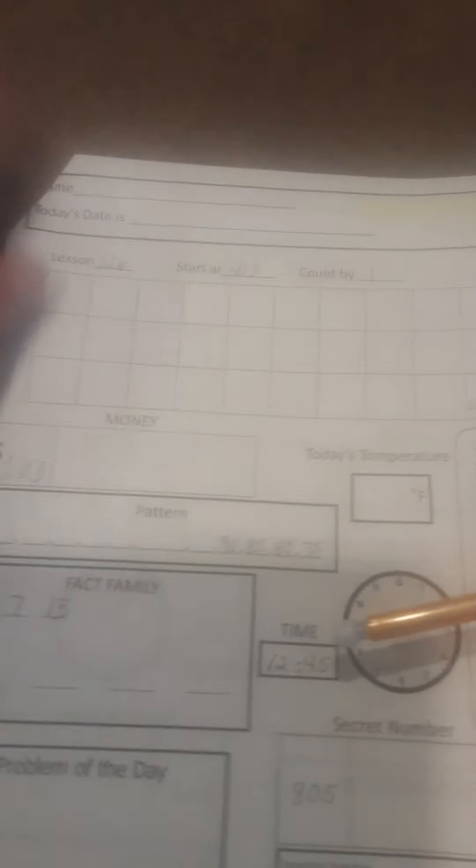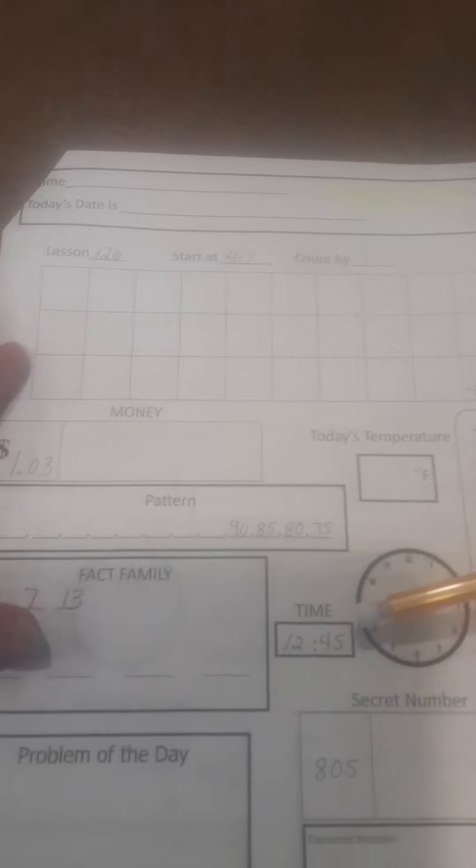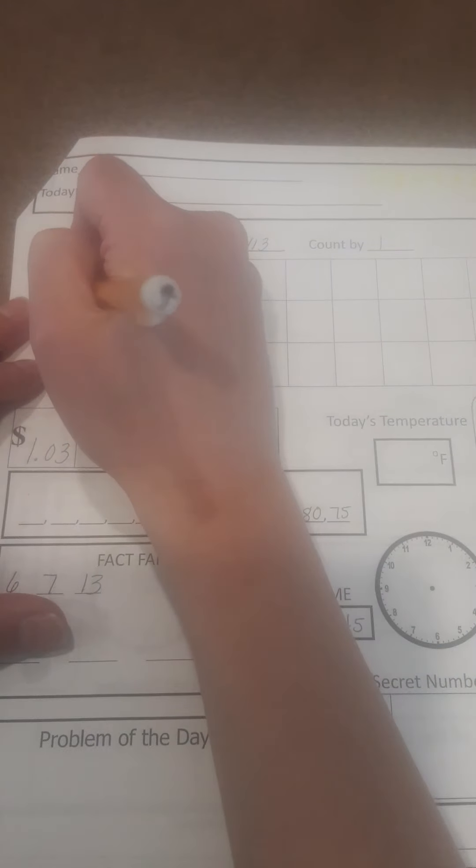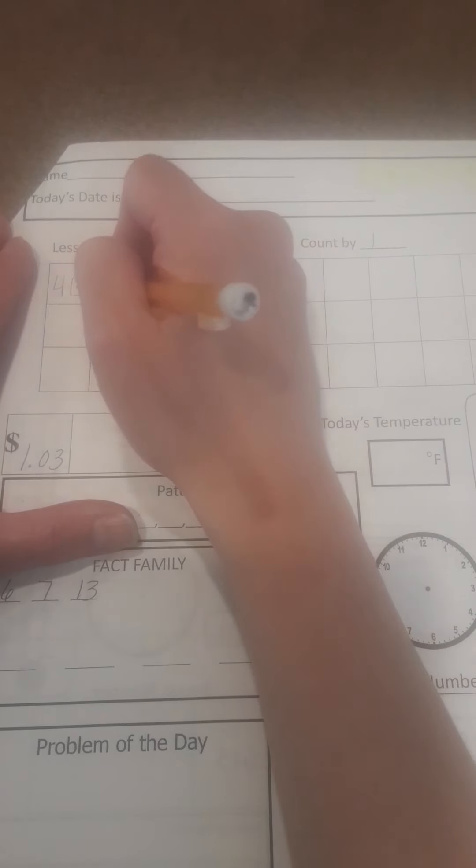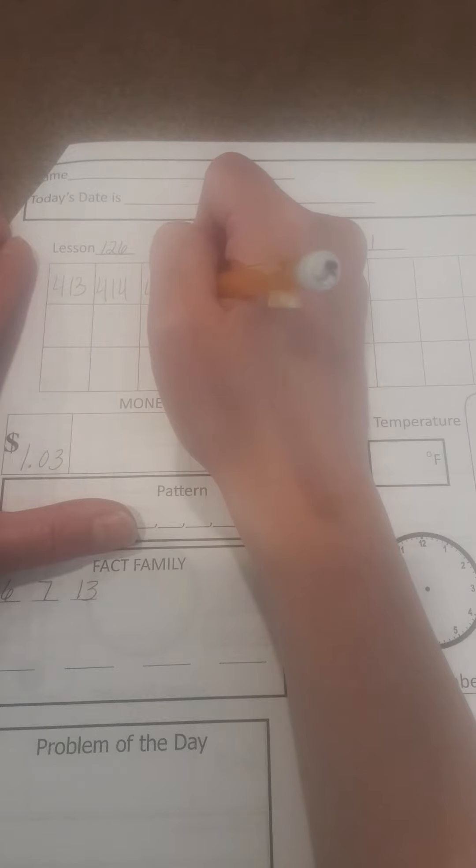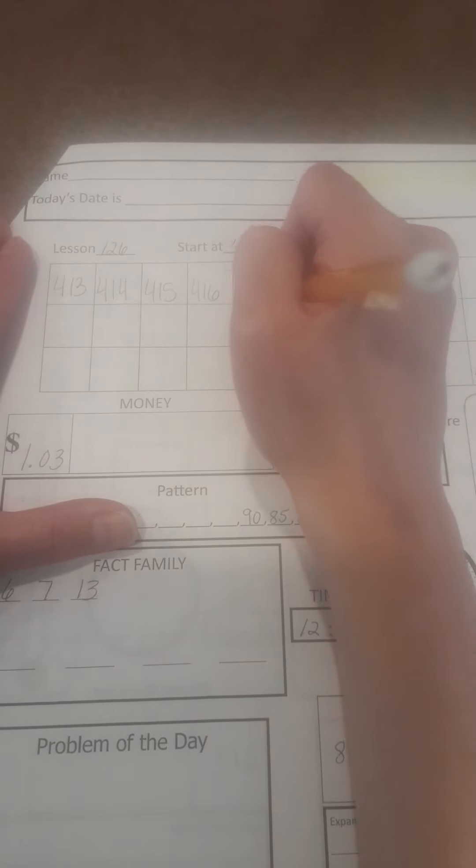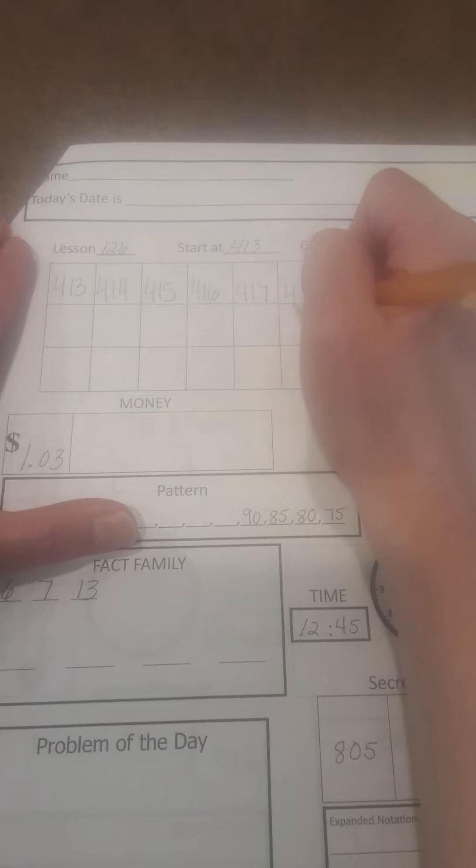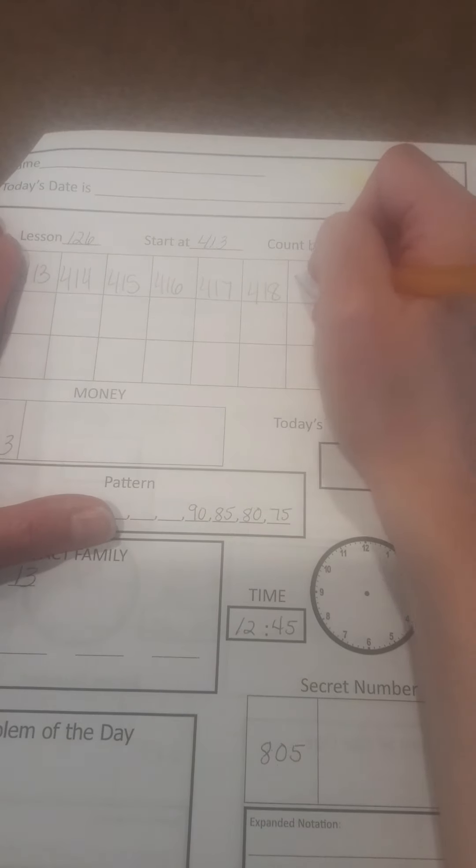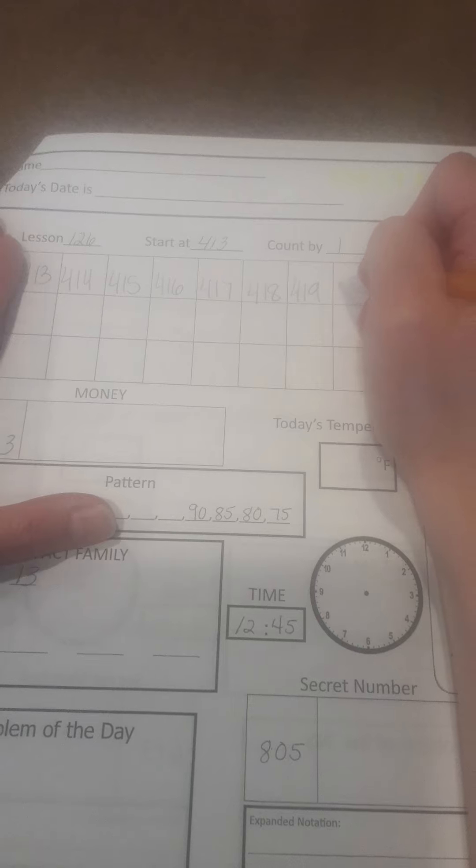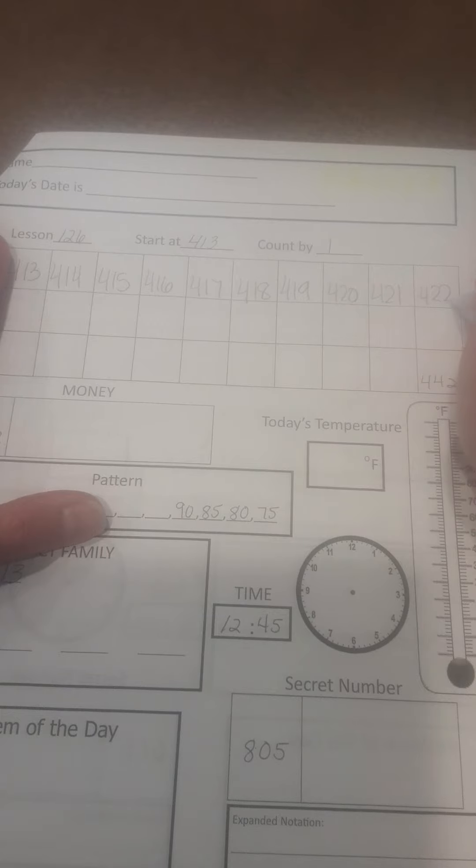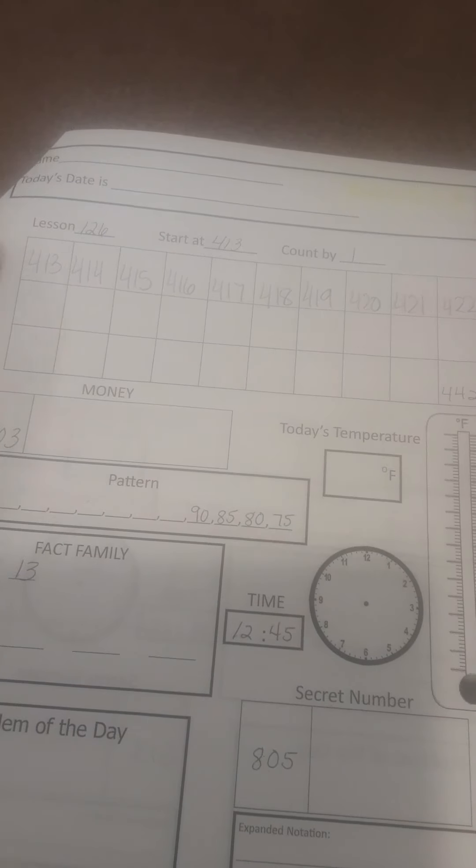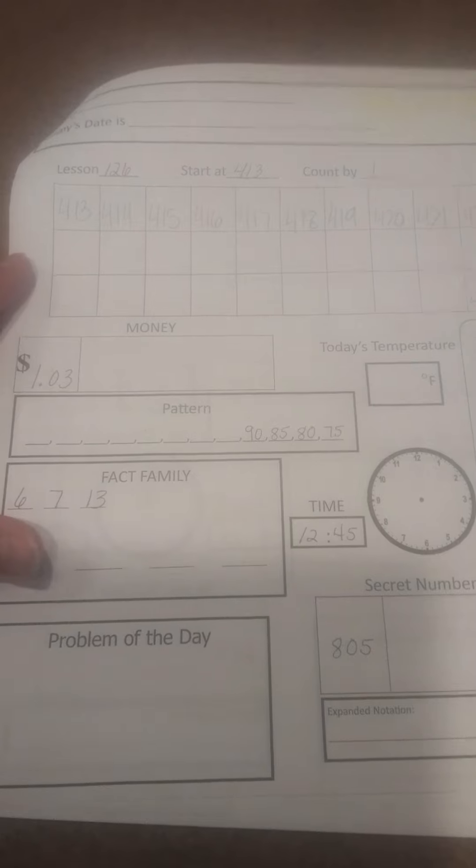Alright, turn to 126. And we are going to start at 413. And we are counting by ones. 413, 414, 415, 416, 417, 418, 419, 420, 421, 422. And I bet you can keep going by counting by ones.